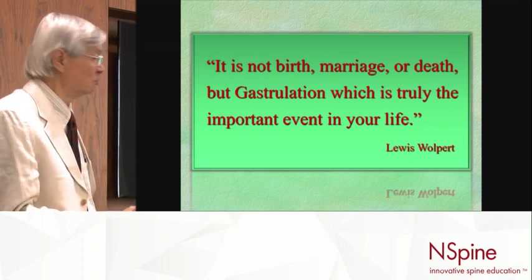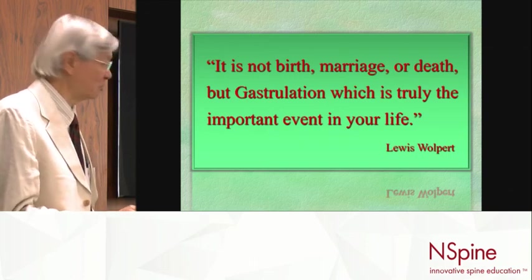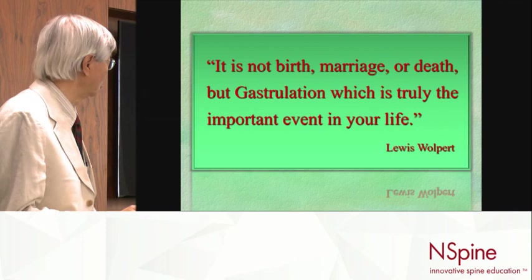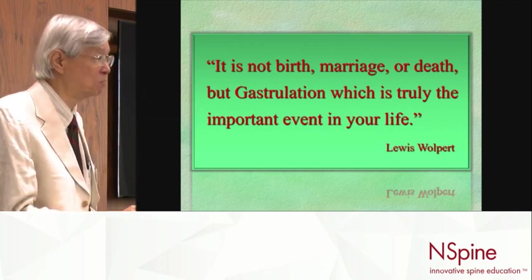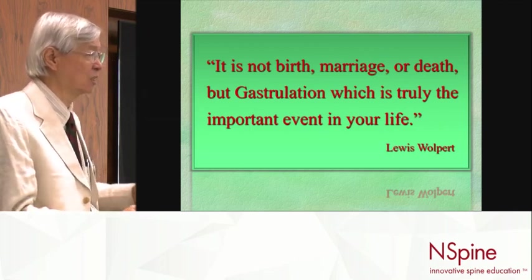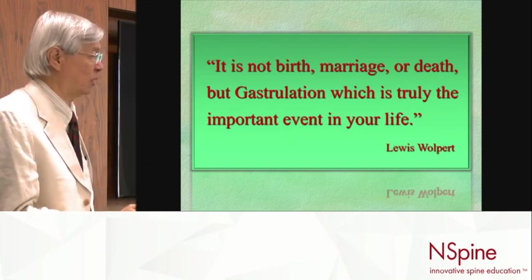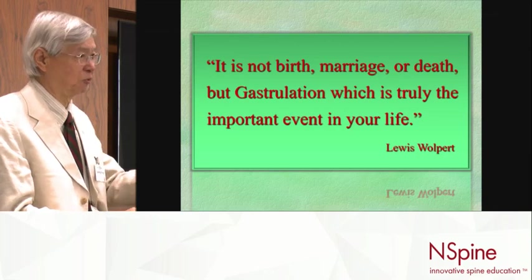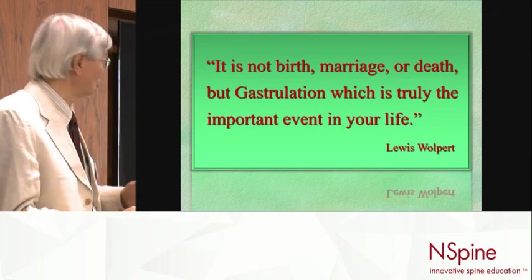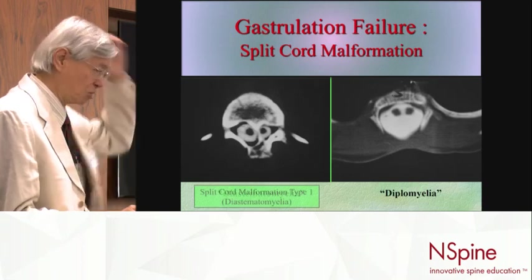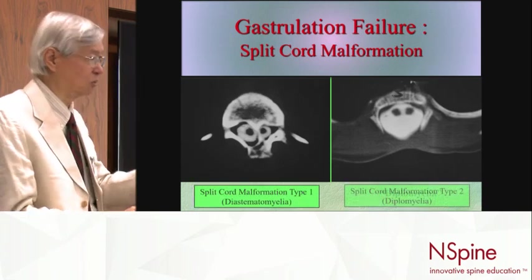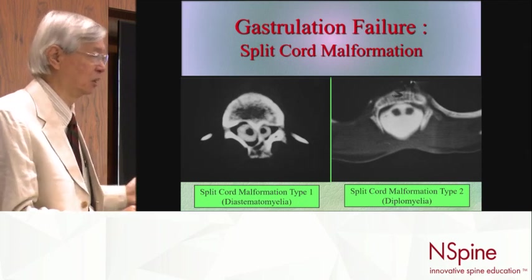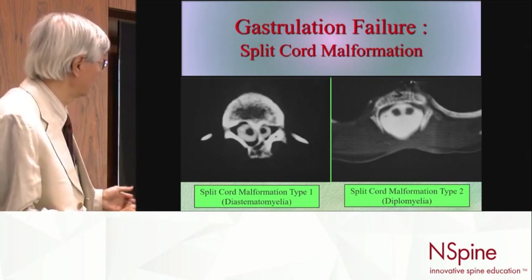Split cord malformation is a malformation of gastrulation, which is the absolute most primitive earliest stage of development of the spinal cord and the spine itself. It's before primary neurulation, it's before secondary neurulation, so it's so early. I want to take you embryologically, because a lot of these variants are predictable from the embryology, if you have some knowledge of it.